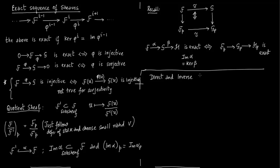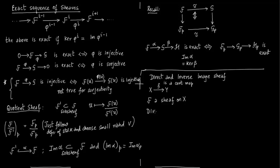Now we come to a very important notion: direct and inverse image sheaves. Say there is a continuous map f between two topological spaces X and Y. We are given a sheaf F on X — meaning for an open set U of X we assign F(U) as an abelian group — and we want to define a sheaf on Y.